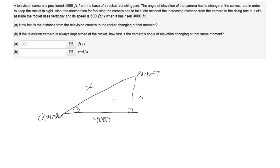For part a, how fast is the distance from the television camera to the rocket changing at that moment? The distance from the camera to the rocket is X, so we're looking for dx/dt.